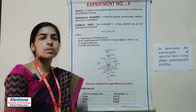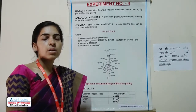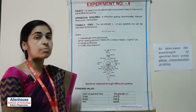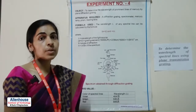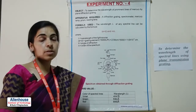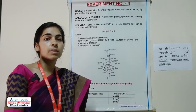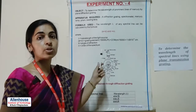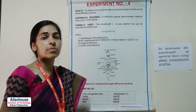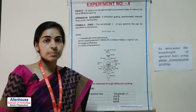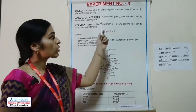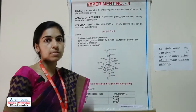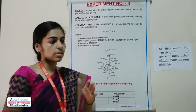Hello students, I am Dr. Rashmi Shukla, associate professor in the department of physics. Today we will determine the wavelength of mercury lamp with the help of diffraction grating. Sodium lamp is a monochromatic source of light, whereas mercury lamp is a polychromatic source of light, which means you will see a large number of colors — the whole spectrum, the whole band of colors.